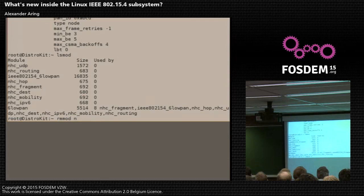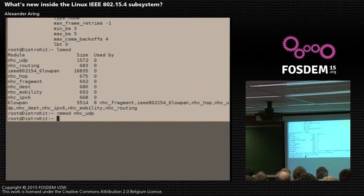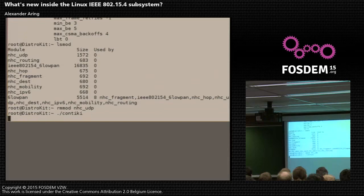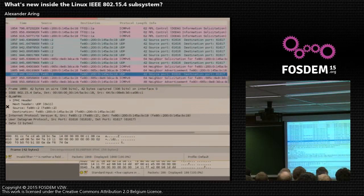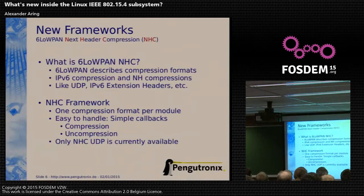Now I want to unload the NHC UDP compression module, so we have no UDP compression anymore. I start again the Contiki demo with the blue LED. Looking at Wireshark, we see in the 6LoWPAN header there is no next header compression anymore — it's just a plain UDP header.